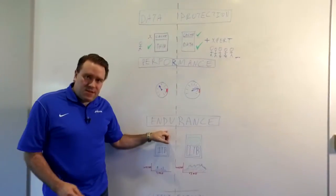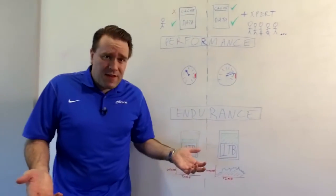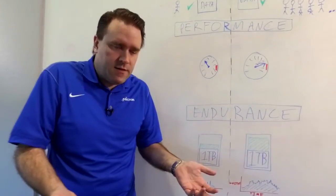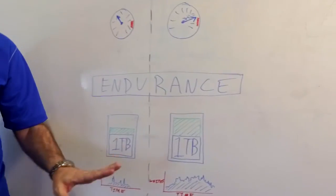The first one is endurance. NAND is a lot like your favorite T-shirt—the more you wear it, the more it wears out. It tends to be around the number of writes you write to the drive. So what we do is we anticipate that.